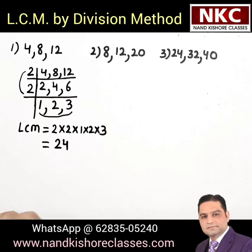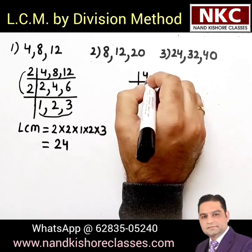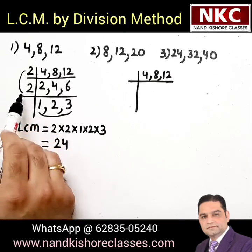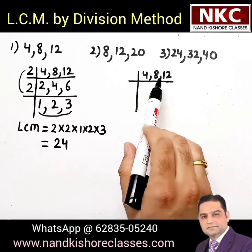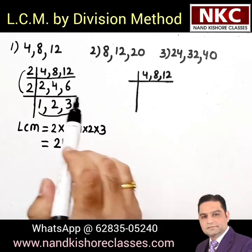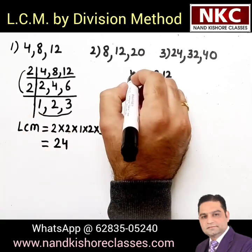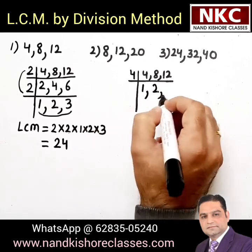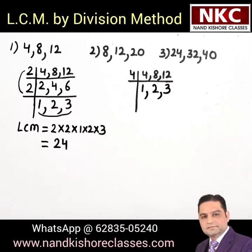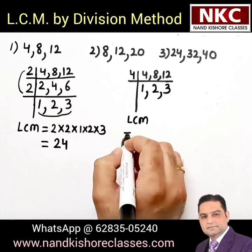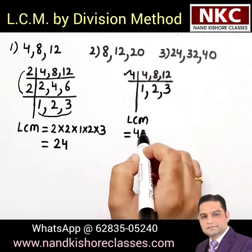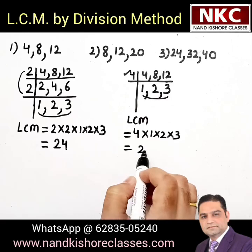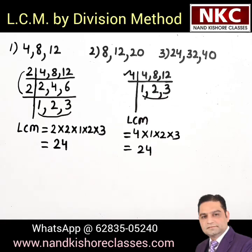I hope you are clear with this method. Let me do the same question again in a different way. We started with 2, but 4, 8 and 12 are all divisible by 4, so it is not mandatory to start with 2 — you can divide directly by 4. 4 times 1 is 4, 4 times 2 is 8, 4 times 3 is 12. The left value is 4 and the bottom values are 1, 2 and 3. You will get the same answer: 24 is the LCM.